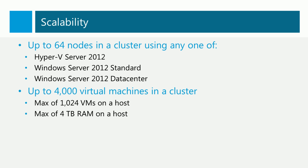There are a number of significant improvements to failover clustering in Windows Server 2012. We can have up to 64 nodes in a cluster using any one of Hyper-V Server 2012, Windows Server 2012 Standard, which now includes all the scalability and features of the Data Center Edition, and of course Windows Server 2012 Data Center Edition. This is a big improvement to the maximum of 16 nodes in Windows Server 2008 R2, which is going to simplify our deployments of a private cloud.